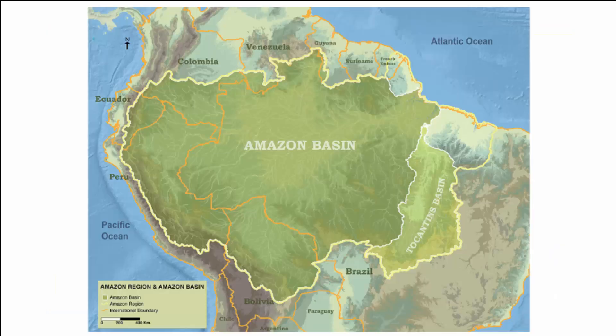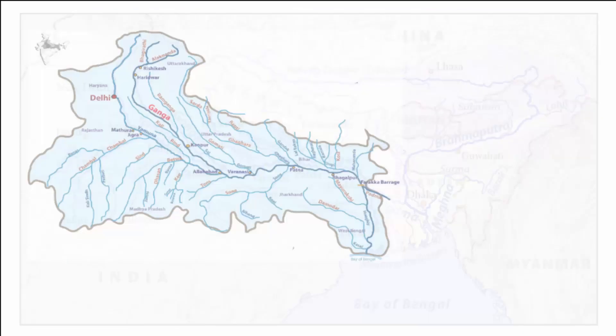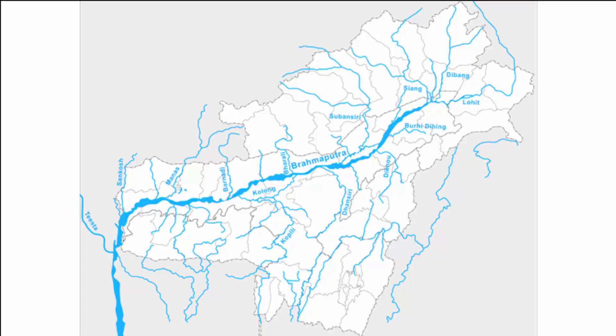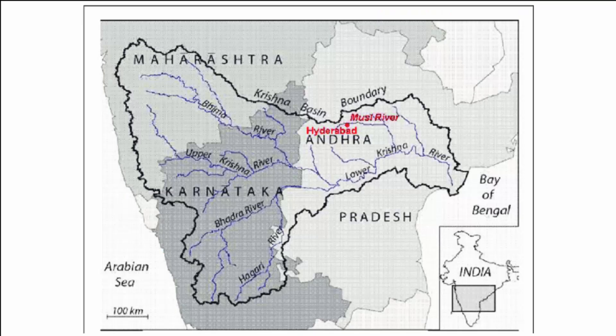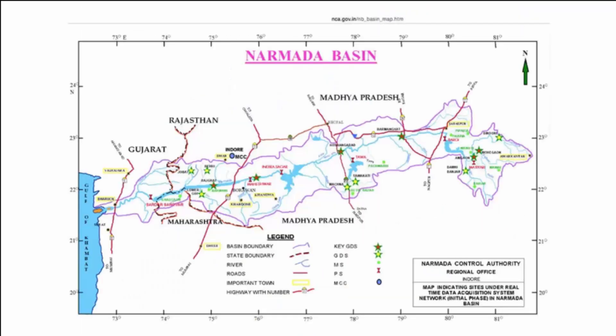The Amazon basin in northern South America is the largest in the world. In India, we have the Ganga river basin, Brahmaputra river basin, Krishna river basin, Mahanadi river basin, Narmada river basin, and more.